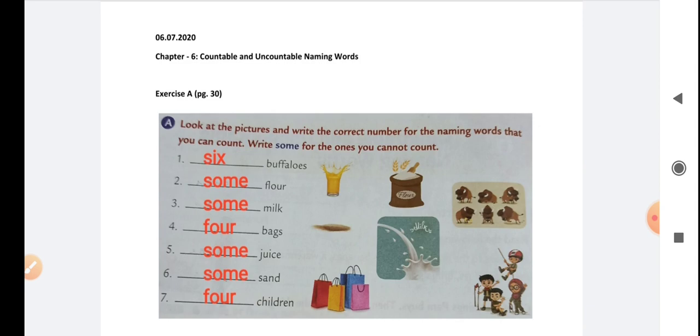Can we count them? Yes, we can count them. So let's start: one, two, three, four. There are four bags. Number five: dash juice. Can you count the juice? We cannot count the juice. We cannot count the juice, but we can count the glasses, but we cannot count the juice, so we say some juice since it is uncountable naming word.